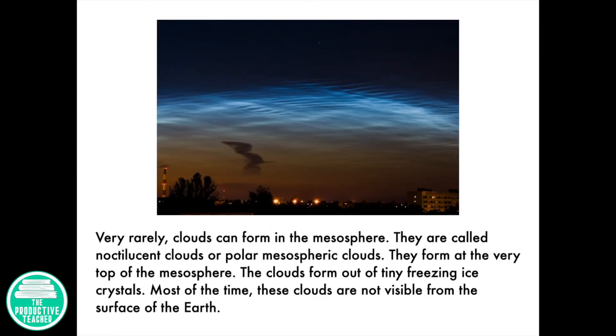Very rarely, clouds can form in the mesosphere. They are called noctilucent clouds or polar mesospheric clouds. They form at the very top of the mesosphere. The clouds form out of tiny freezing ice crystals. Most of the time, these clouds are not visible from the surface of the Earth.